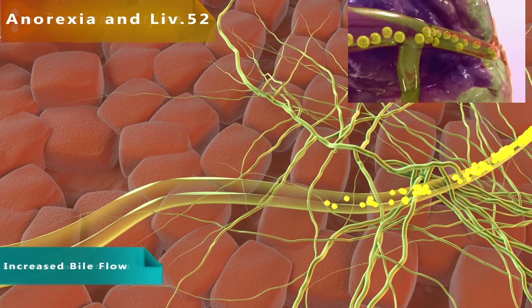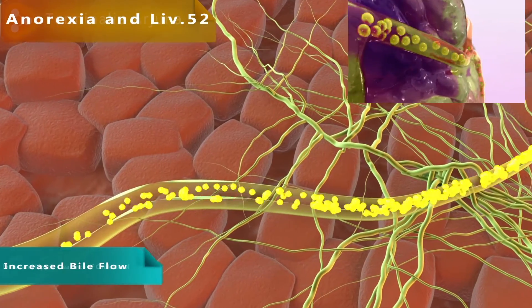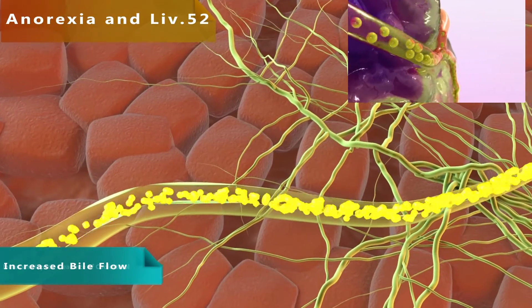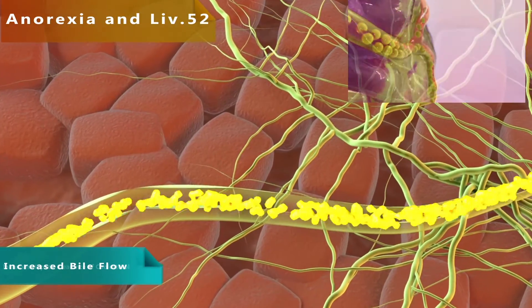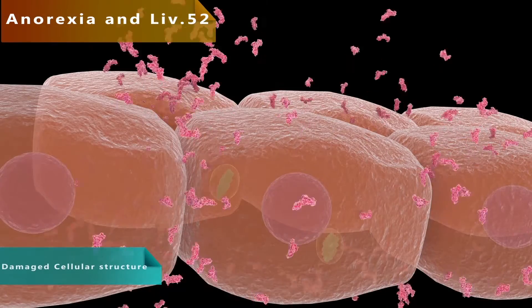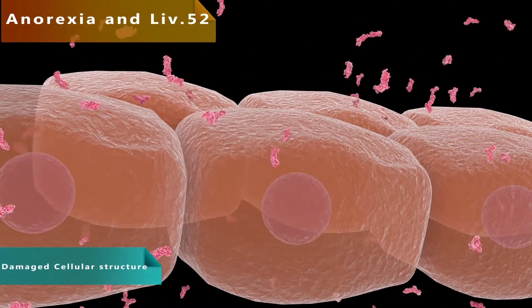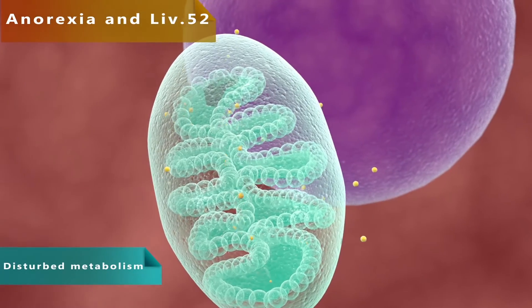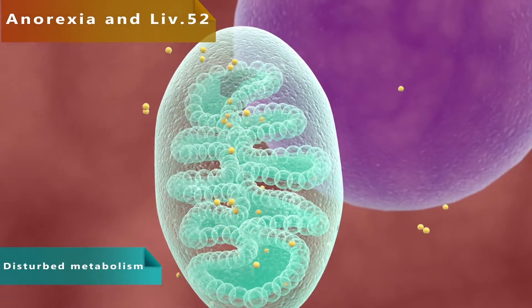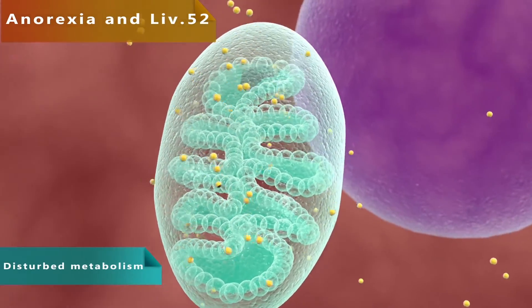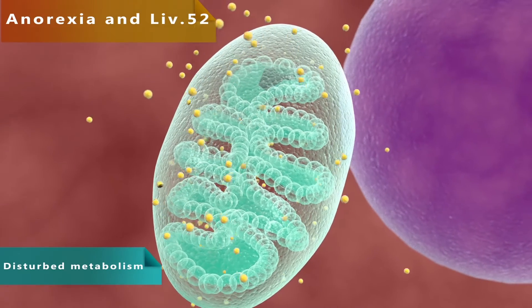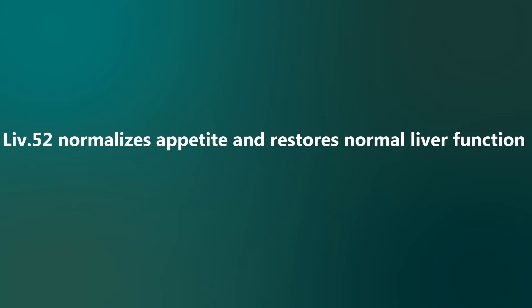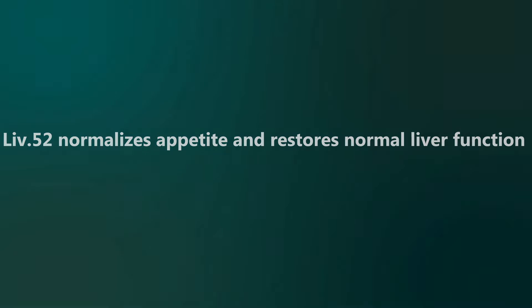Liver dysfunction leads to appetite loss. LIV-52 corrects the disrupted bile flow and restores the damaged cellular structure to help normalize appetite and restore normal liver functions.